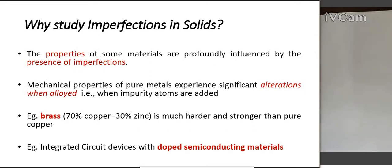By introducing some imperfection, we can alter the properties of the solid — that is the importance of studying imperfections. We actually intentionally add some imperfections. For example, you may study about semiconductors — silicon and germanium diodes. There we use some impurities; we add impurities into the pure material. By means of doping, we add impurities and thereby create a semiconductor material.